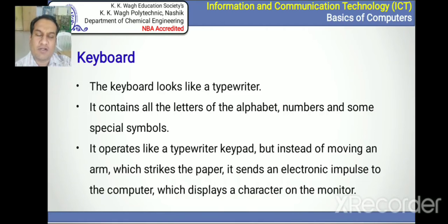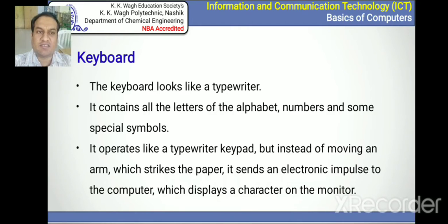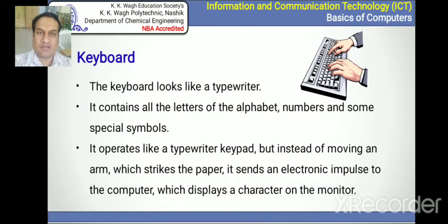The keyboard looks like a typewriter but contains different keys: alphanumeric keys, alphabets, numbers, and specific symbols. It operates like a typewriter but instead of moving an arm that strikes paper, it sends an electronic impulse. When we press A, B, C, or 1, 2, 3, it gives an electronic impulse to the computer which displays the character on the monitor. We can give output in terms of printer, plotter, scanner, mail, etc.